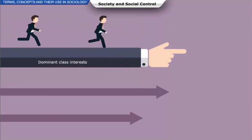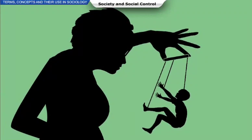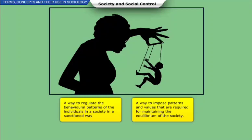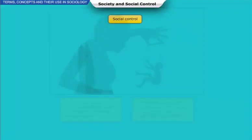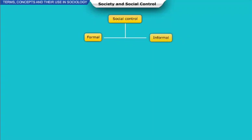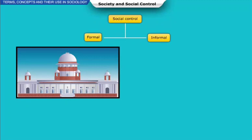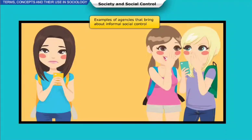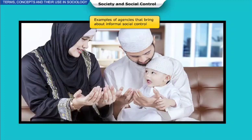Social control can be understood in two ways: either as a way to regulate the behavioral patterns of individuals in a sanctioned way, or as a way to impose patterns and values required for maintaining the equilibrium of society. There are two types of social control — formal and informal. Formal social control takes place when structured and codified forms of mechanisms are used, like the judiciary and the government. Informal social control is entirely personal and unauthorized, exercised by agencies like family, peer groups, and religious groups on an individual to ensure compliance towards socially accepted norms of behavior.